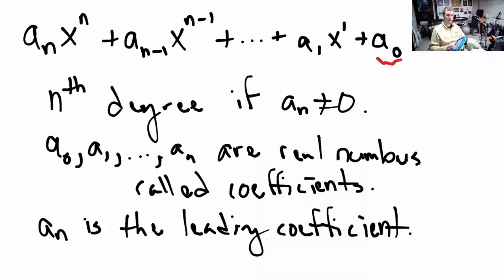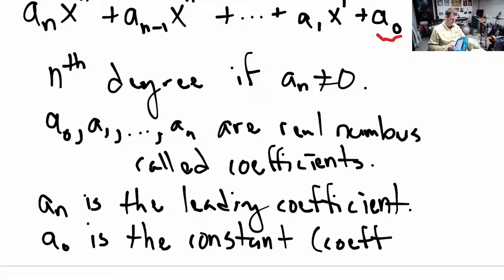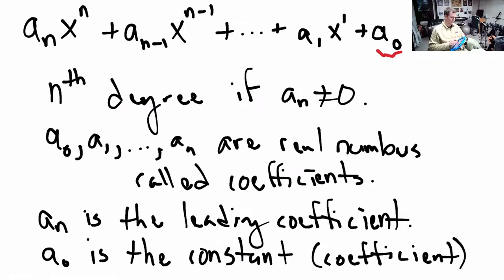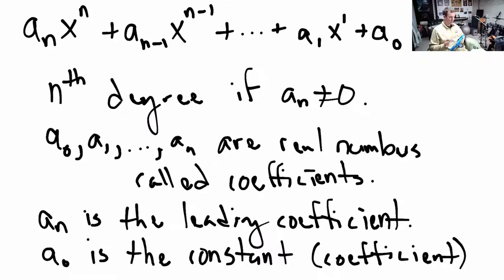The one on the far right, a sub 0, is called the constant coefficient — sometimes just 'the constant.' In polynomials, the things that are added together are called terms. So a sub n times x to the n is a term, and so on. A sub 0 by itself is a term — it's a constant term because it doesn't have a variable. Everything else is a variable term. That's, for the most part, the vocabulary we're covering here.